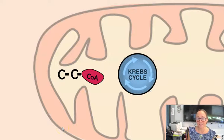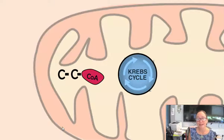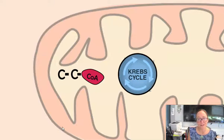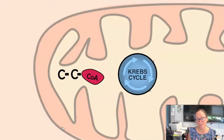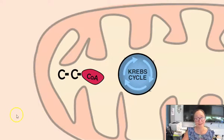Here we're going to begin to talk about the Krebs cycle. The Krebs cycle is actually a series of eight reactions. However, since this video is targeted for a general biology class in high school, we're not going to memorize or even see the eight steps involved. Instead, we're going to focus on the big picture of the Krebs cycle.